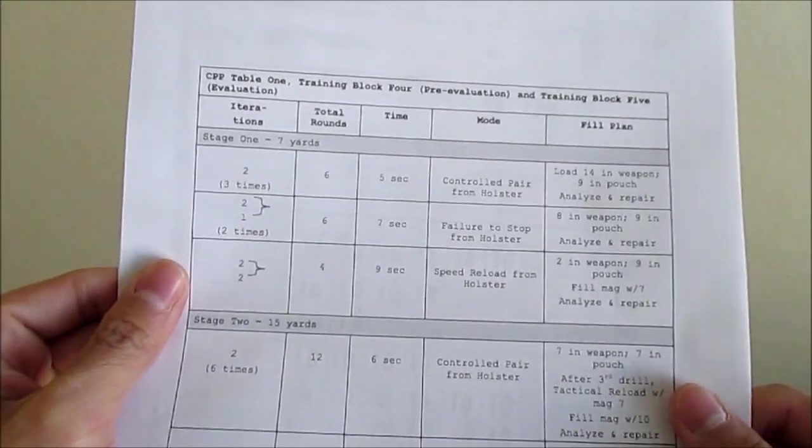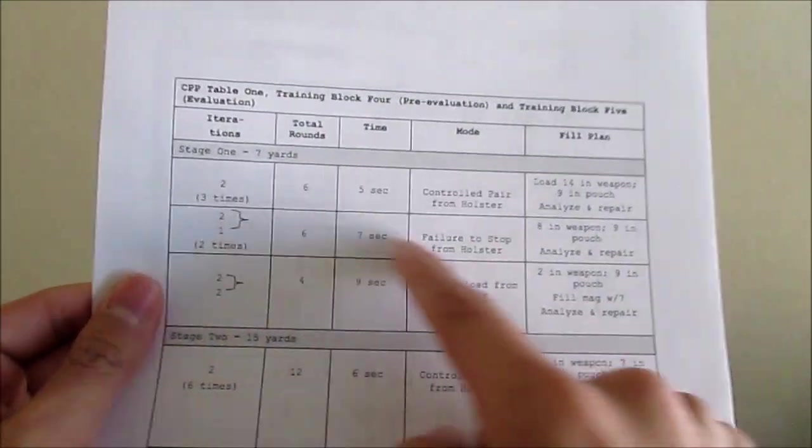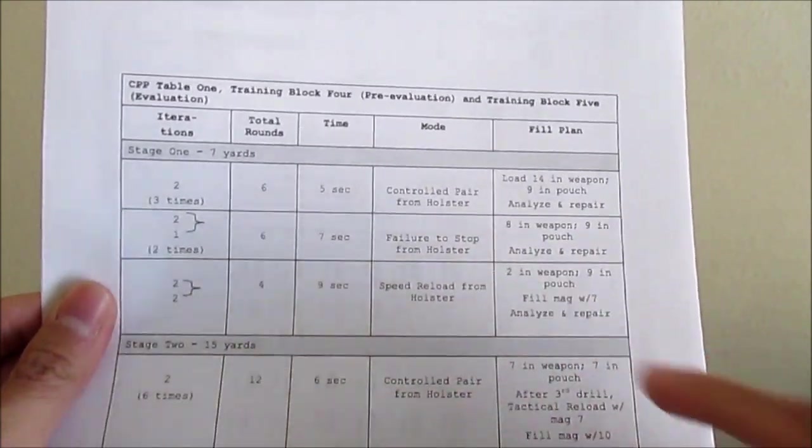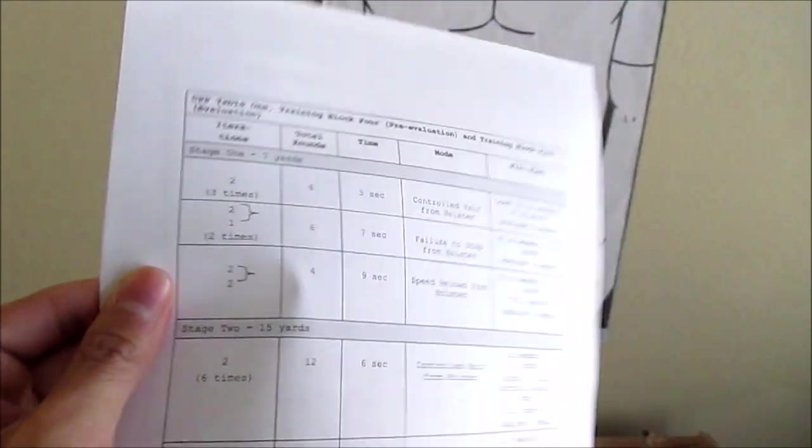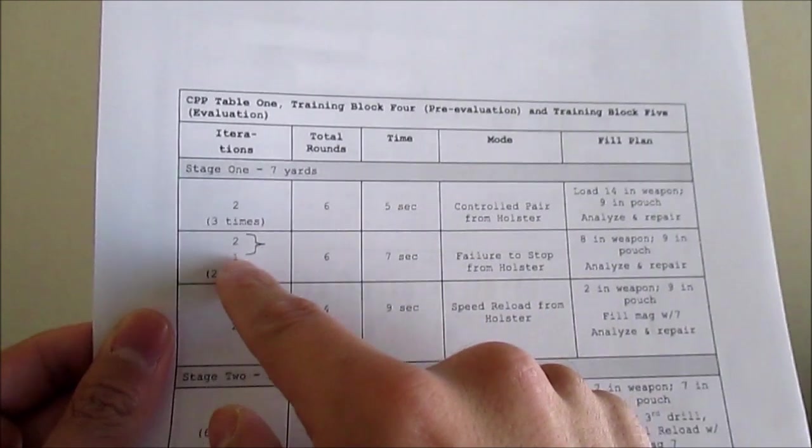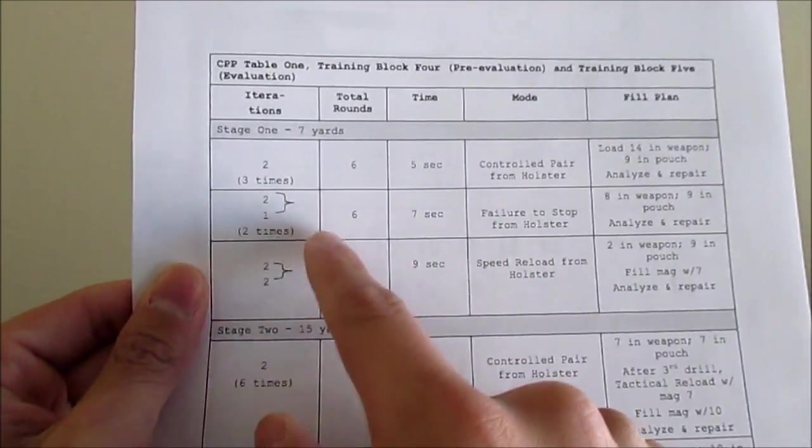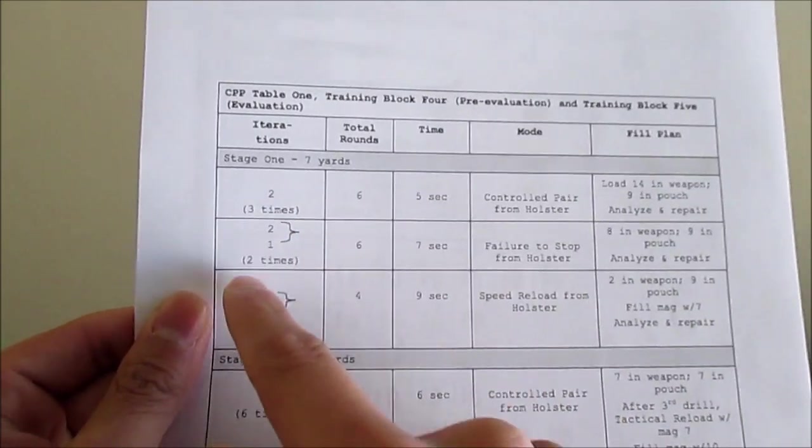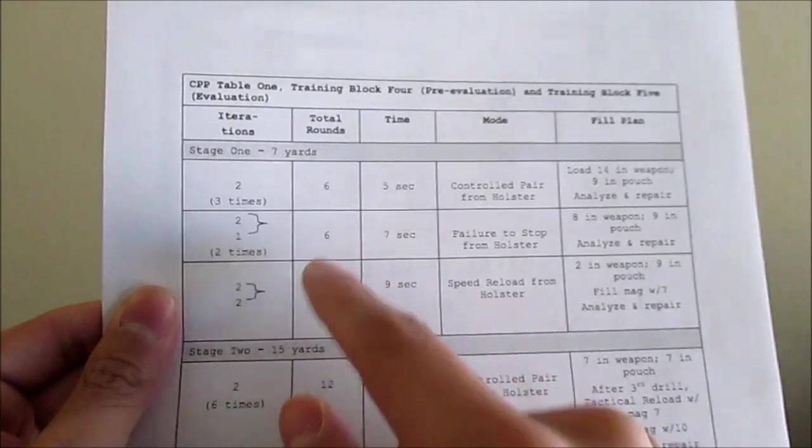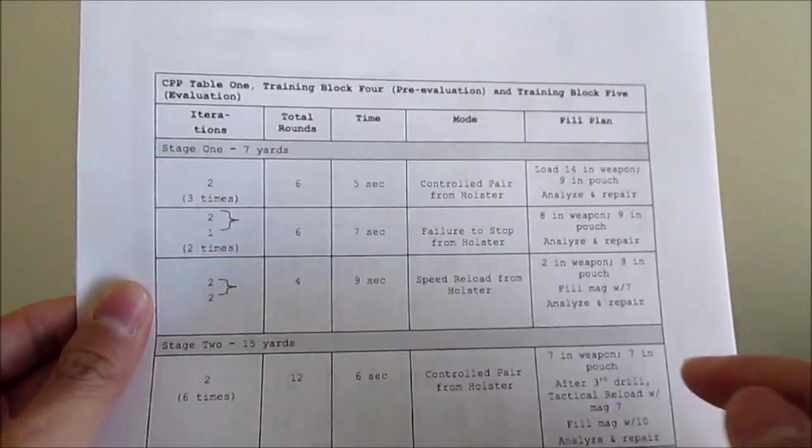The next one is failure to stop from the holster. So that'll be 2 shots to the body and then 1 shot to the head. So that's 3 shots. And then you do that 2 times. So there's your 6 rounds. It'll give you 7 seconds.